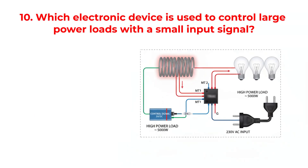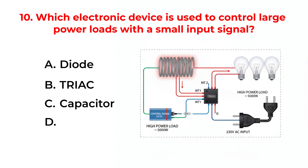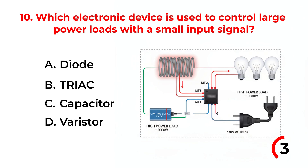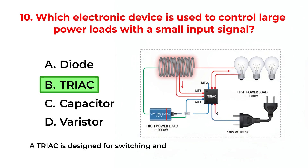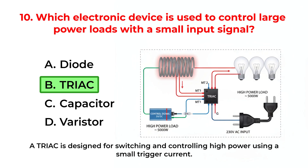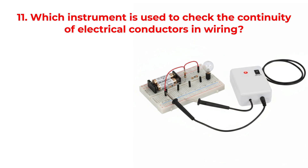Which electronic device is used to control large power loads with a small input signal? A. Diode. B. Triac. C. Capacitor. D. Varistor. The correct answer is Option B: Triac. A triac is designed for switching and controlling high power using a small trigger current.